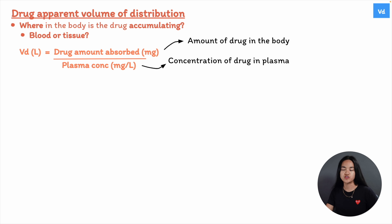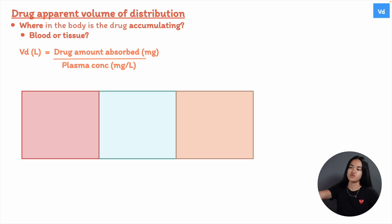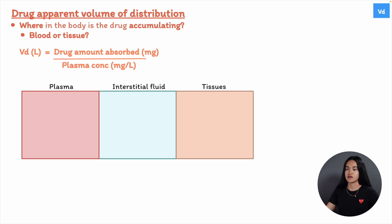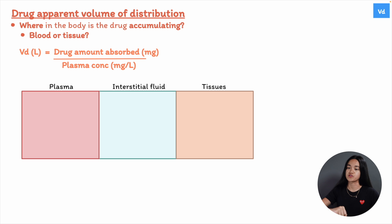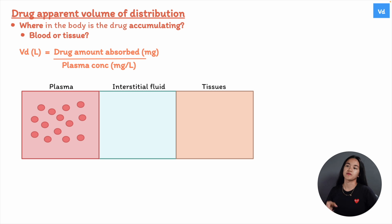We can use Vd to compare the distribution of a drug with the volumes of the body's water compartments. Although it doesn't represent a real physical volume, it's calculated using the equation: volume of distribution equals the amount of drug absorbed divided by the plasma concentration. Vd is generally expressed in liters. Recall that once a drug enters the body, it has the potential to distribute into any compartment: plasma, interstitial fluid, and the intracellular compartment. To understand Vd, we'll break it down into three categories: low, moderate, and high volume of distribution.